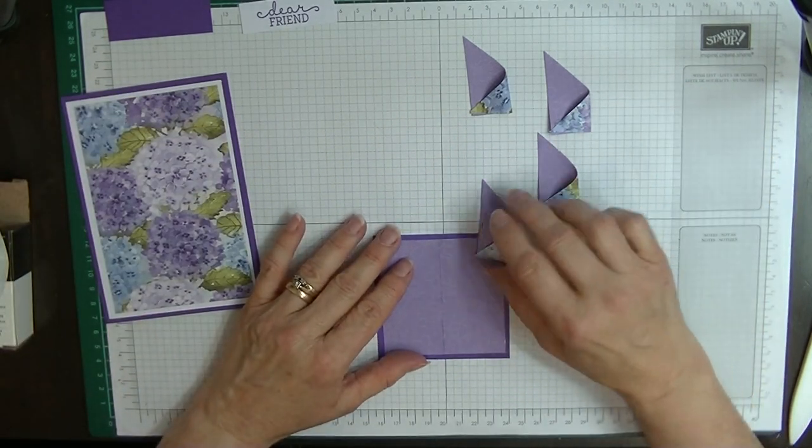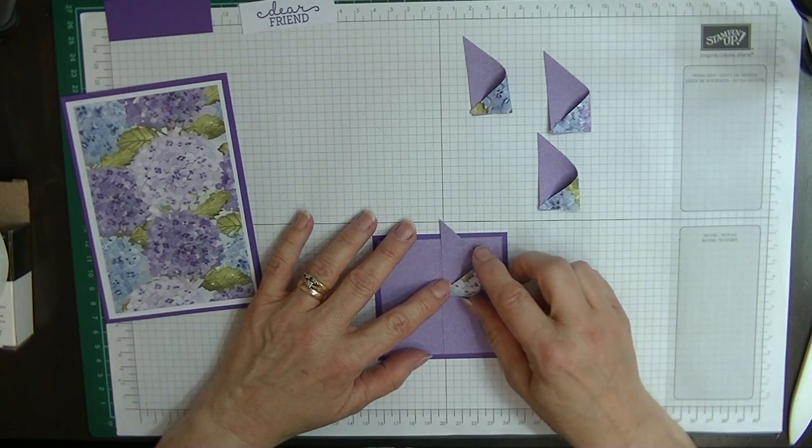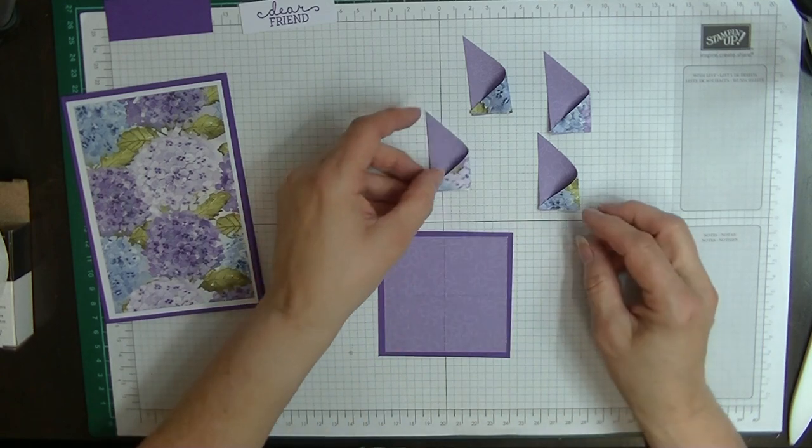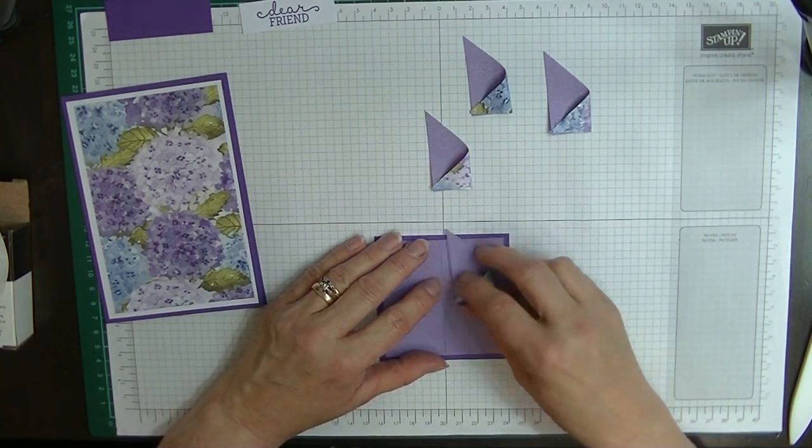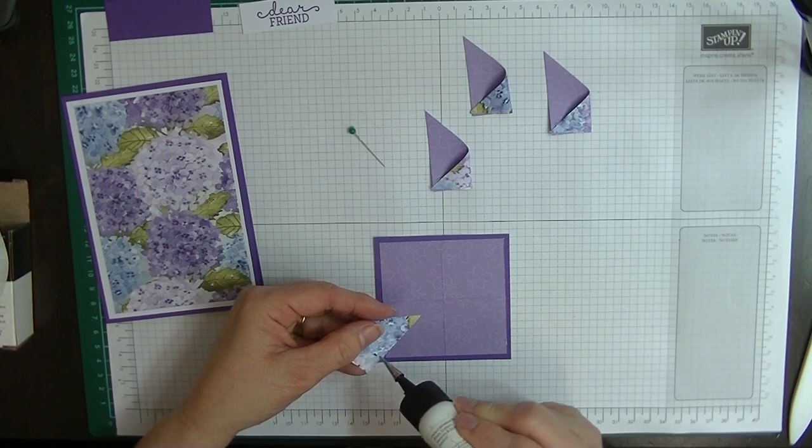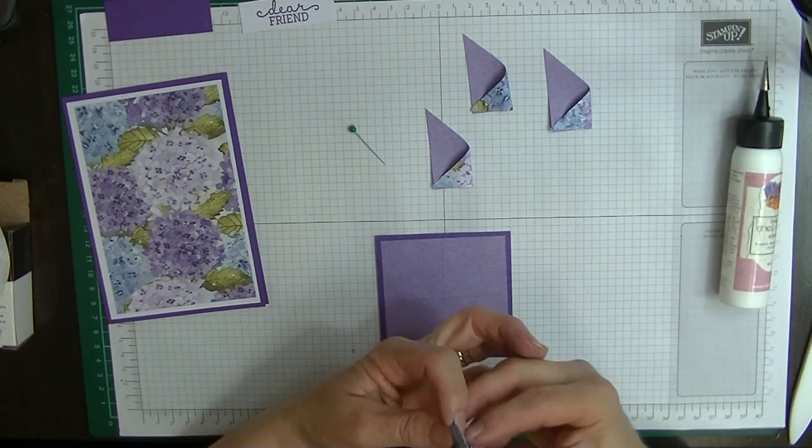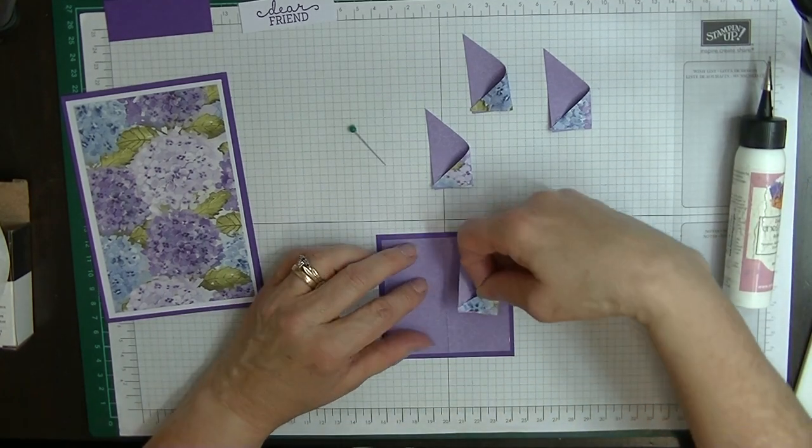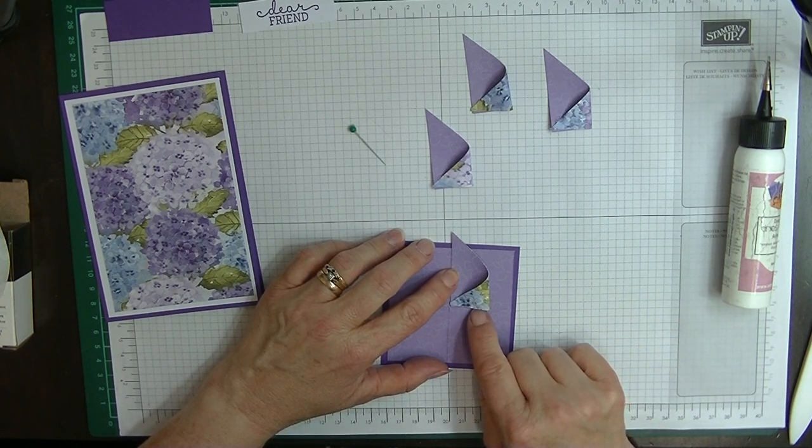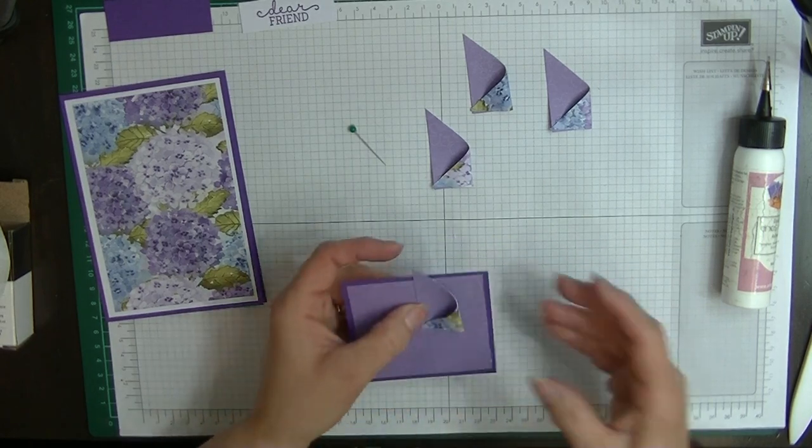What we're going to do next is we're going to pop these onto our piece of card like so. We probably should have had them the other way around I think. What we're going to do is we're going to pop some glue along this edge here, this long edge now, and this short edge. We're going to then butt it up against the long edge into that corner and then onto the next one down the bottom here, like so.